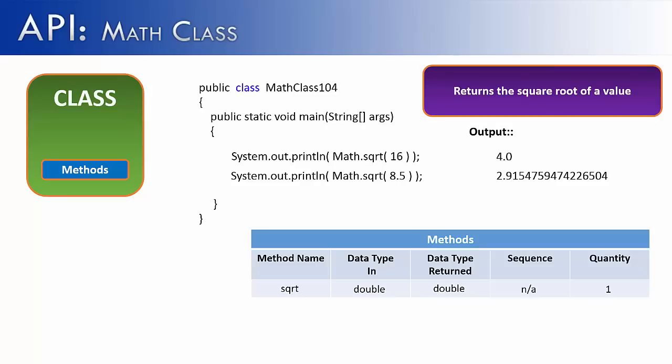One of the things that an API covers are methods. And we're going to look at a few methods and see how the API spells out everything you would ever want to know about a particular method. So we're going to start with the square root method. And I've shown how to use the square root method inside of a program. And I've also shown all the information that you'd want to know about it. Its name, what data type you take in, what data type it returns, does it have a sequence, and how many values you pass to it.